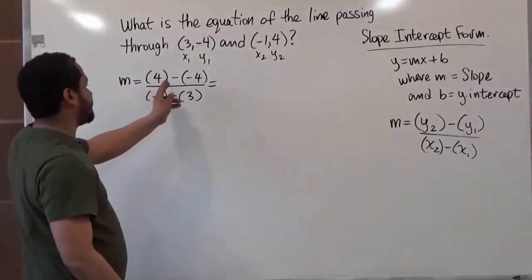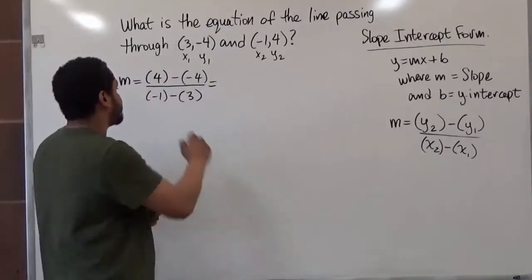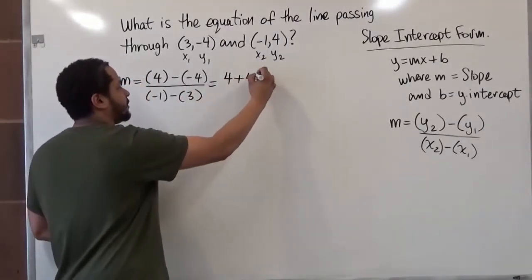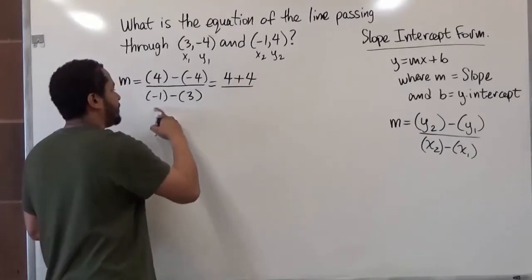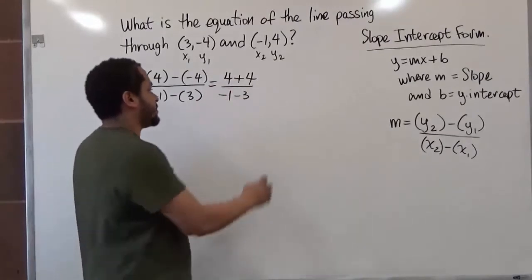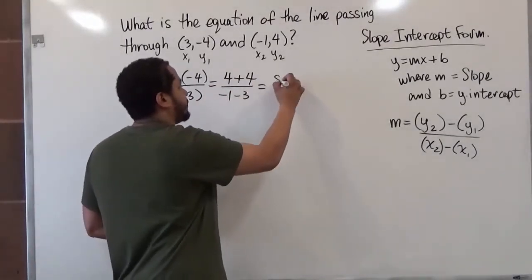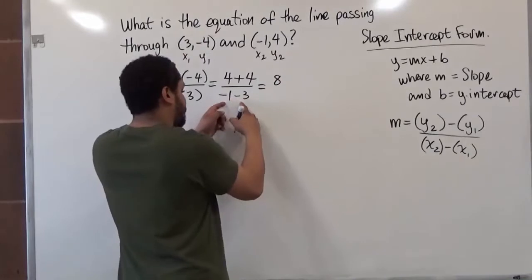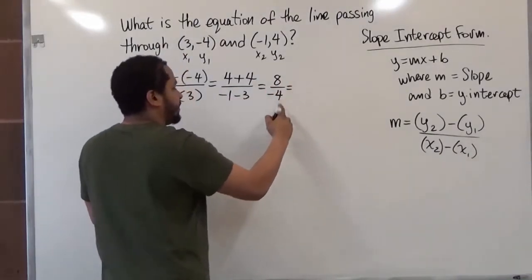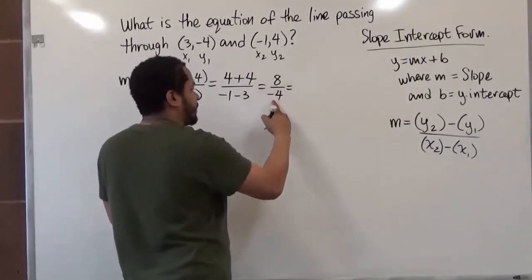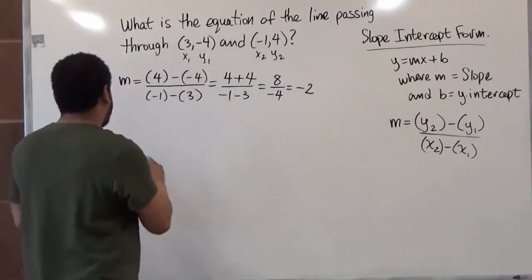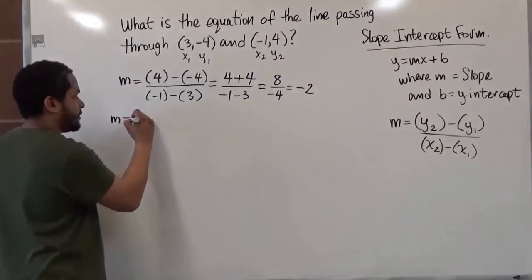Our first step is just going to be to figure out the sign changes, if any. We're going to have positive 4 plus — because a negative negative makes a positive — another 4, divided by negative 1 minus 3. The positive positive adds up, so we have 8 on top. On the bottom, a negative and a negative also add up, and we keep the sign, which is negative 4. Finally, we divide the two: positive divided by a negative is negative, and 8 divided by 4 is 2. So our slope value is negative 2.